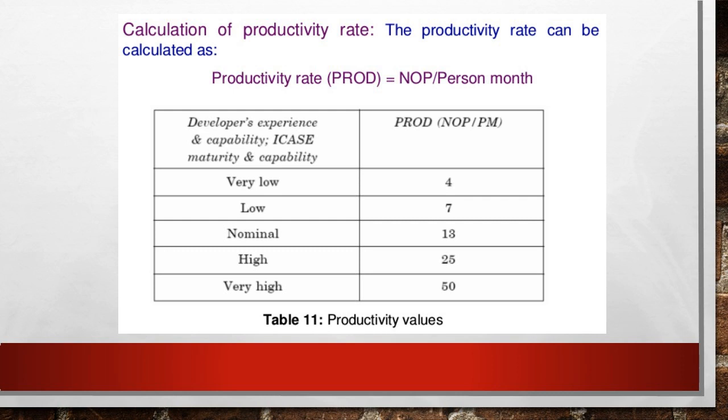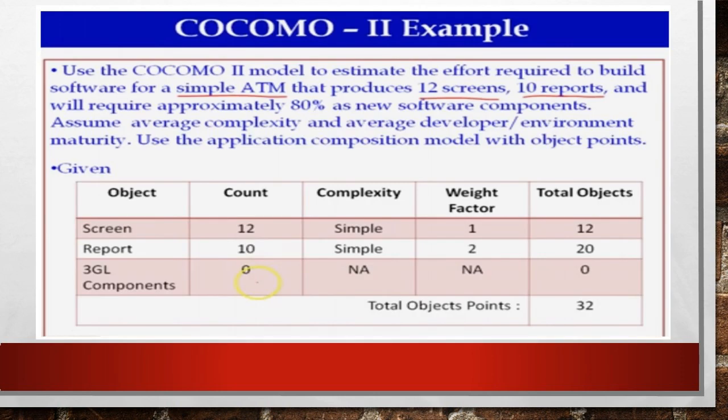Let us do one problem. Use COCOMO 2 model to estimate the effort required to build software for simple ATM that produces 12 screens, 10 reports, and will require approximately 80% as new software components. Estimate the performance average. And 3GL components are not given, so it is 0.